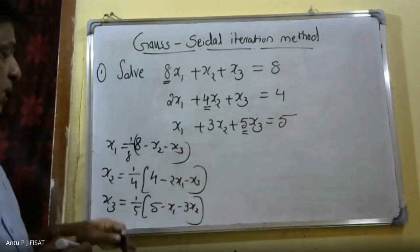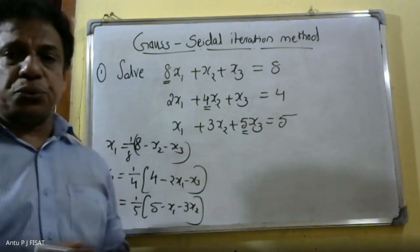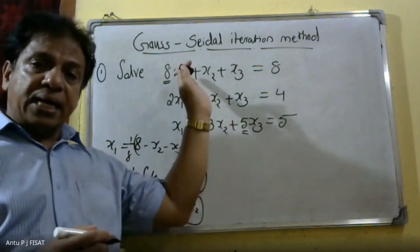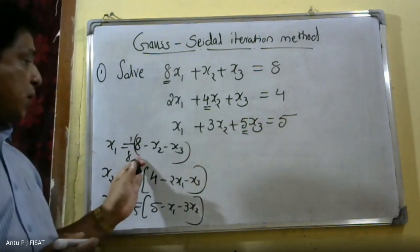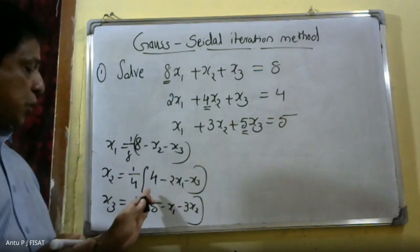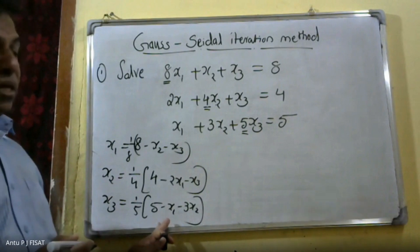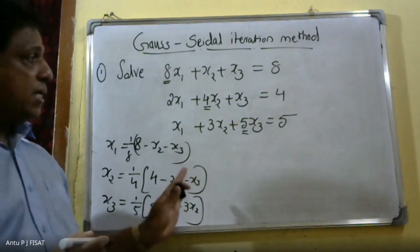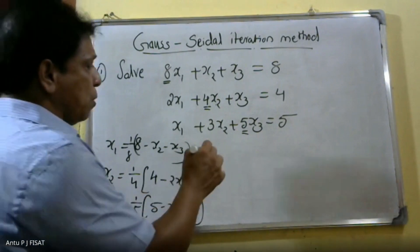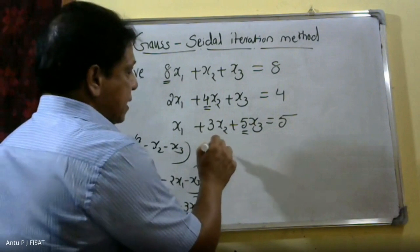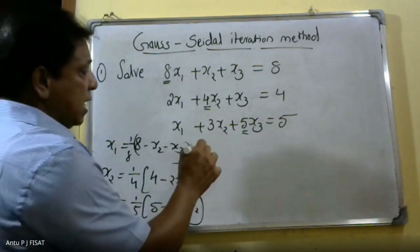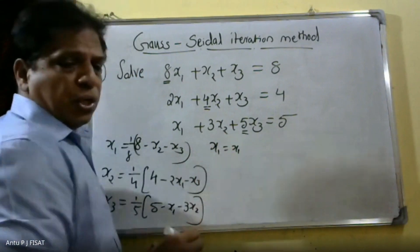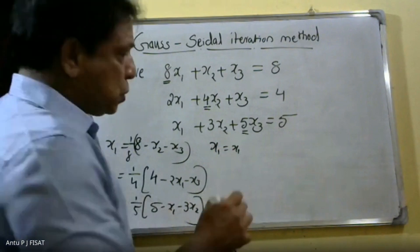We take x1, x2, x3 as our iteration variables. For the first iteration, we assume the initial values: x1 raised to 0, x2 raised to 0, and x3 raised to 0 are all equal to zero.